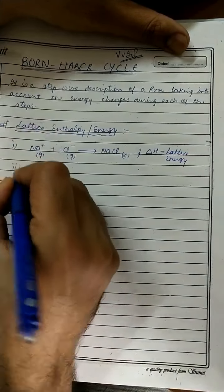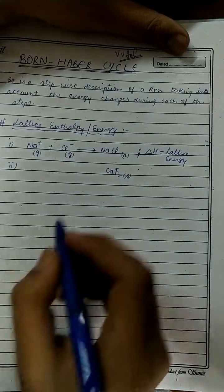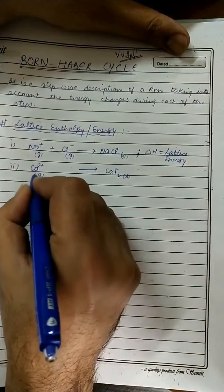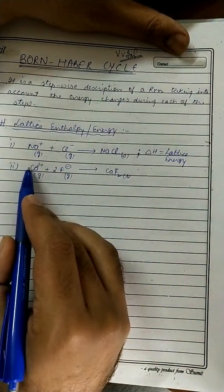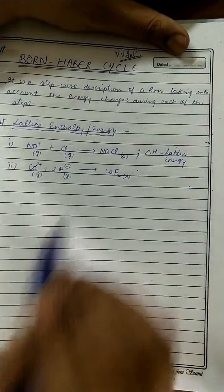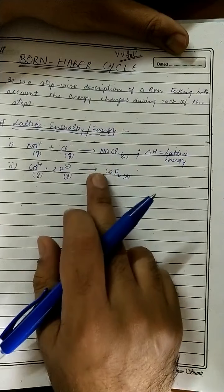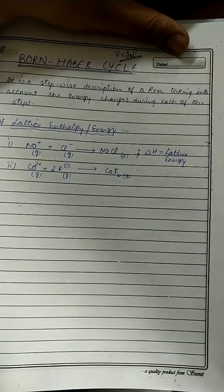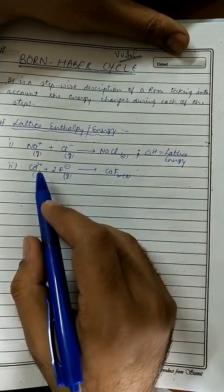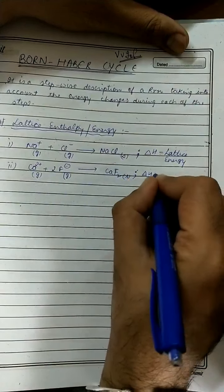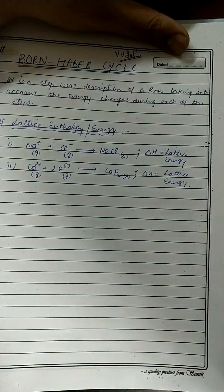For example, if we want to prepare CaF₂ (calcium fluoride), it forms from Ca²⁺ and 2F⁻. Here one mole of cation and two moles of anion combine to form one mole of ionic compound. We want to prepare one mole of ionic compound from its constituent ions in gaseous state. The energy change occurring is called lattice energy, and this energy is actually the energy released — so lattice energy here is negative.